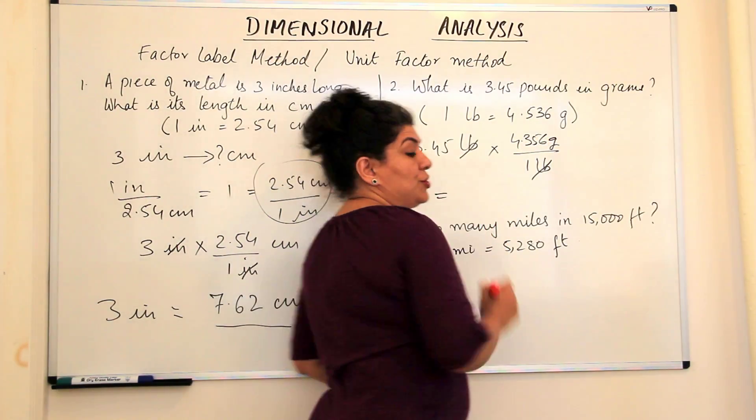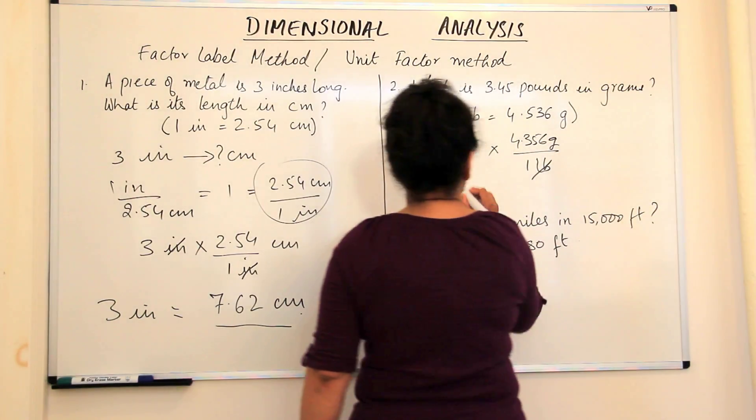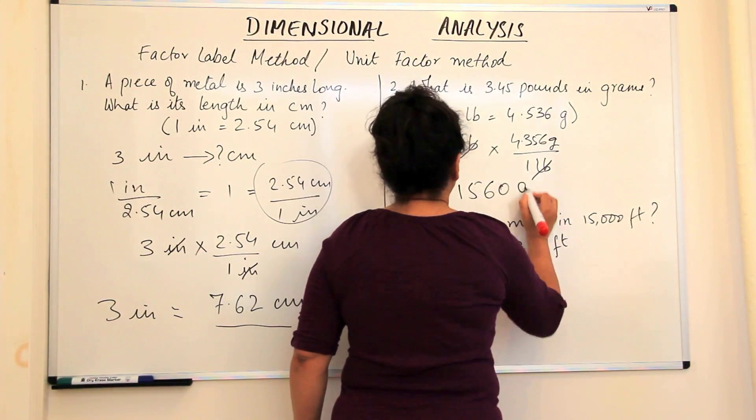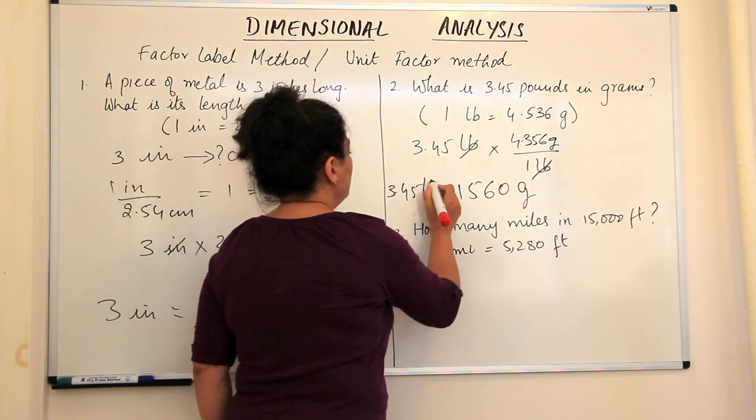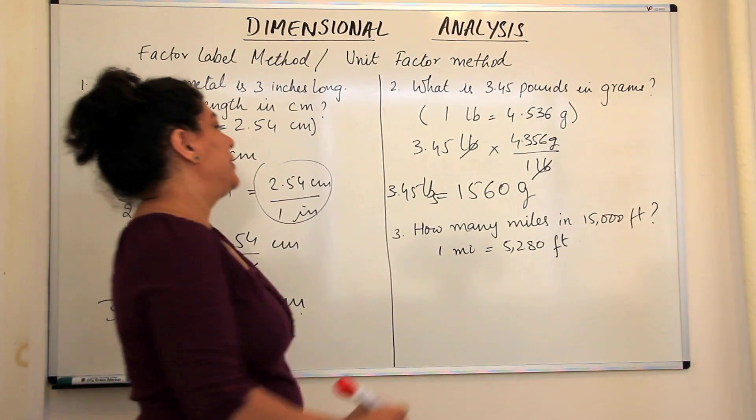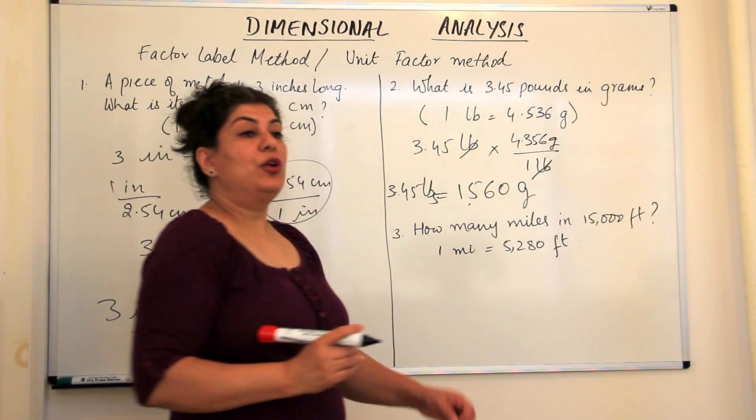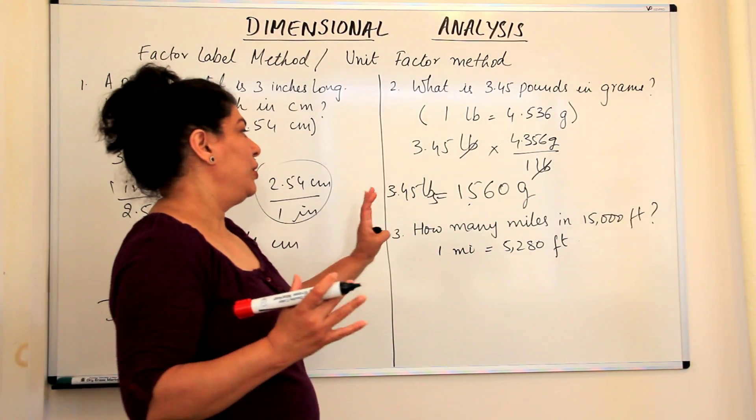The answer to this would be equal to 1560 grams. So 3.45 pounds is equal to 1560 grams. We will not go into the significant figures here. We're just solving it numerically.